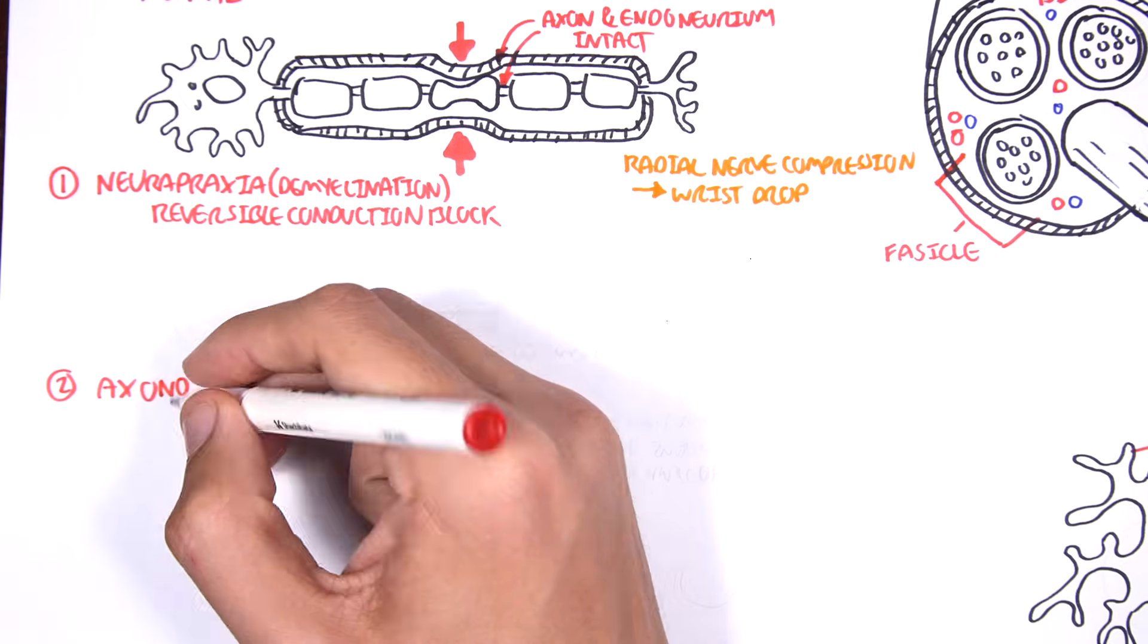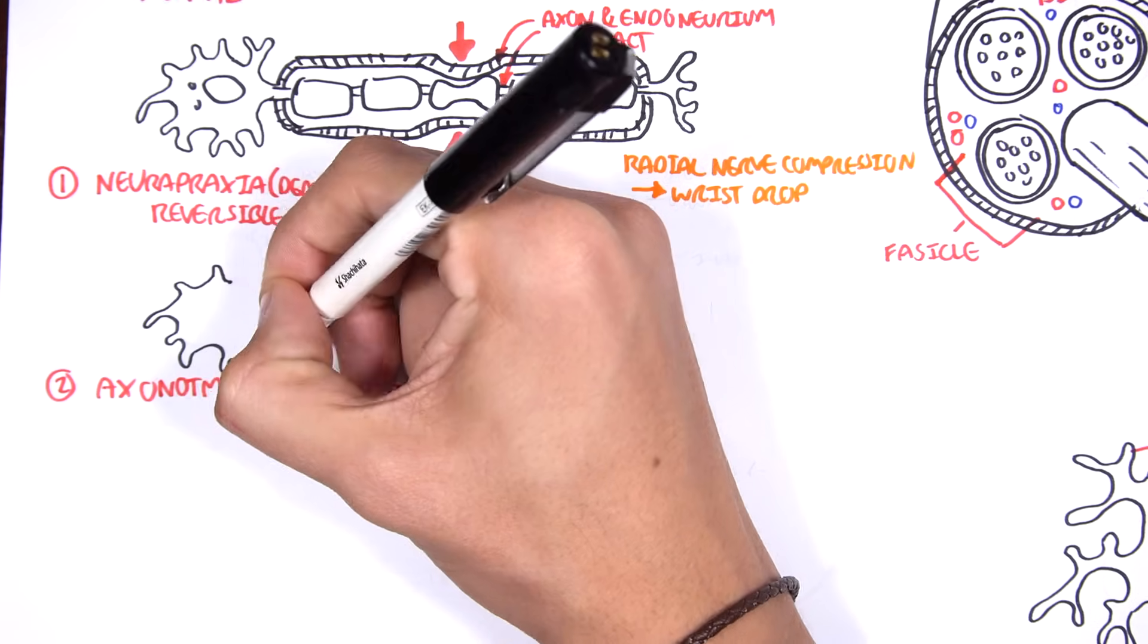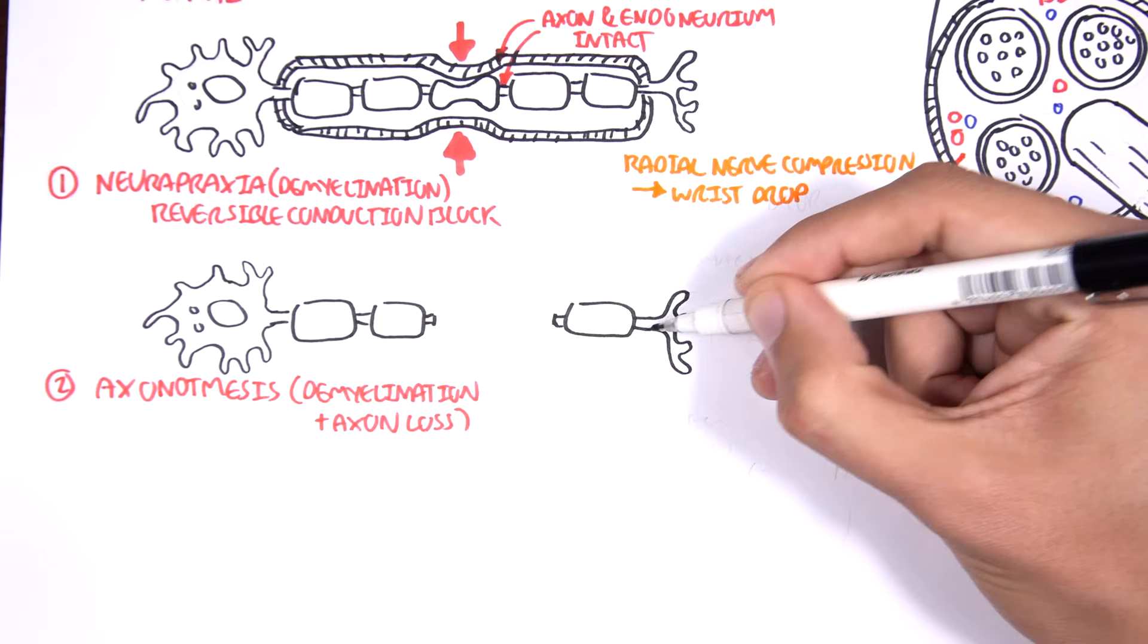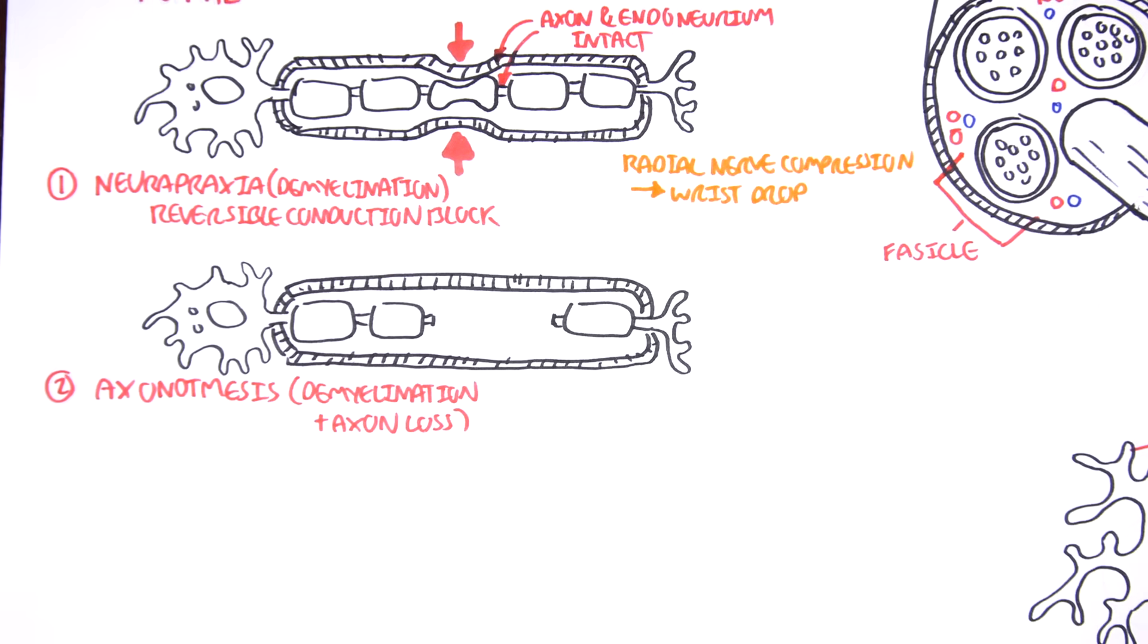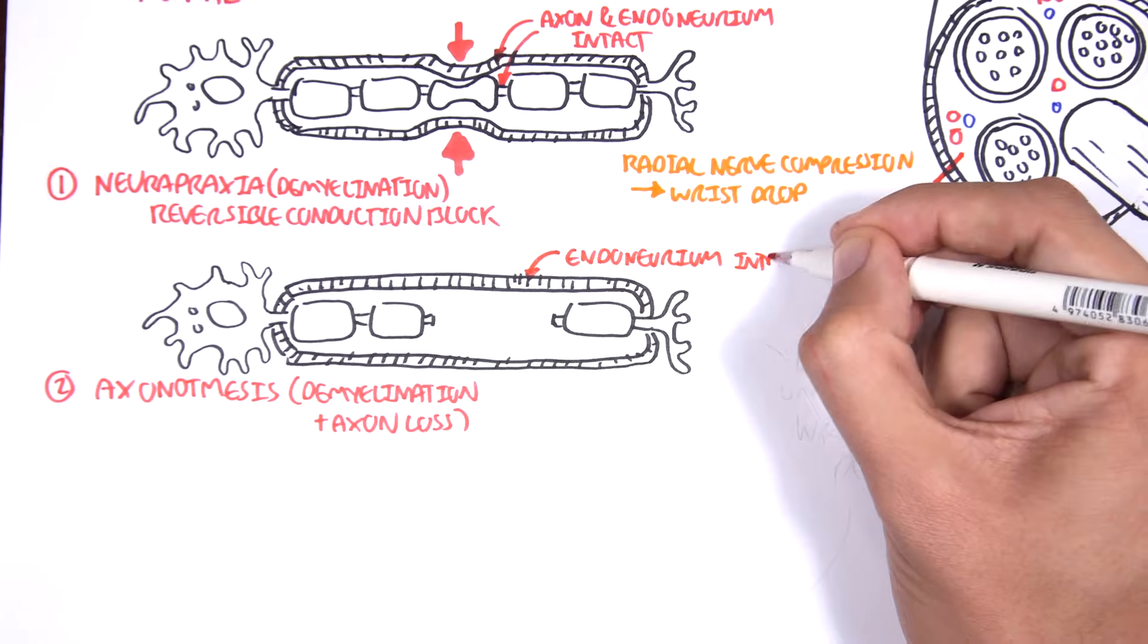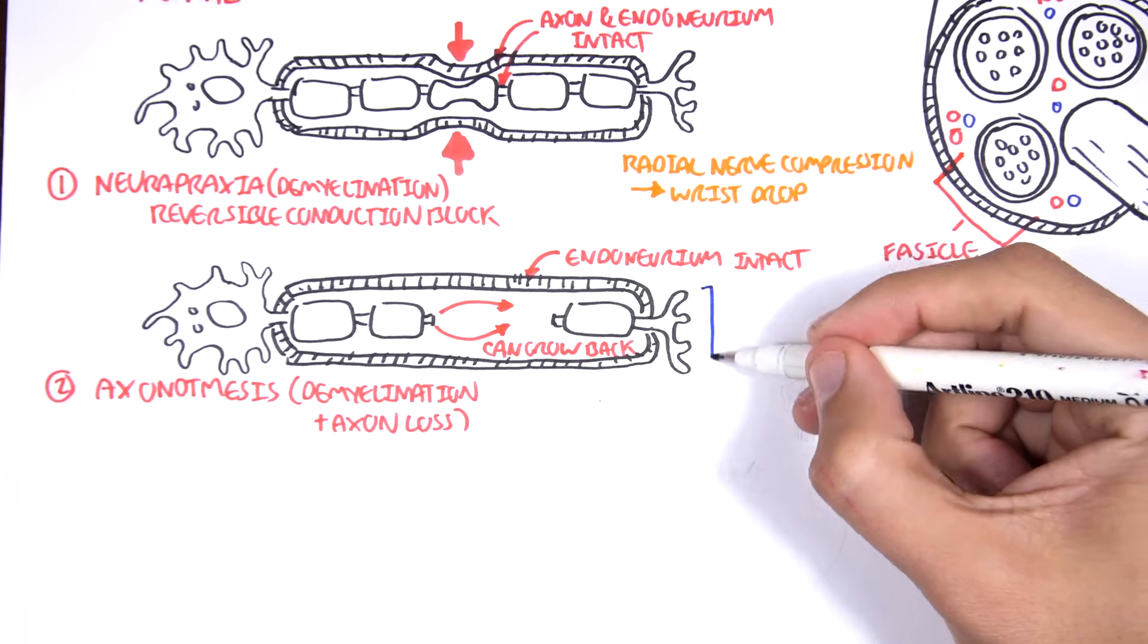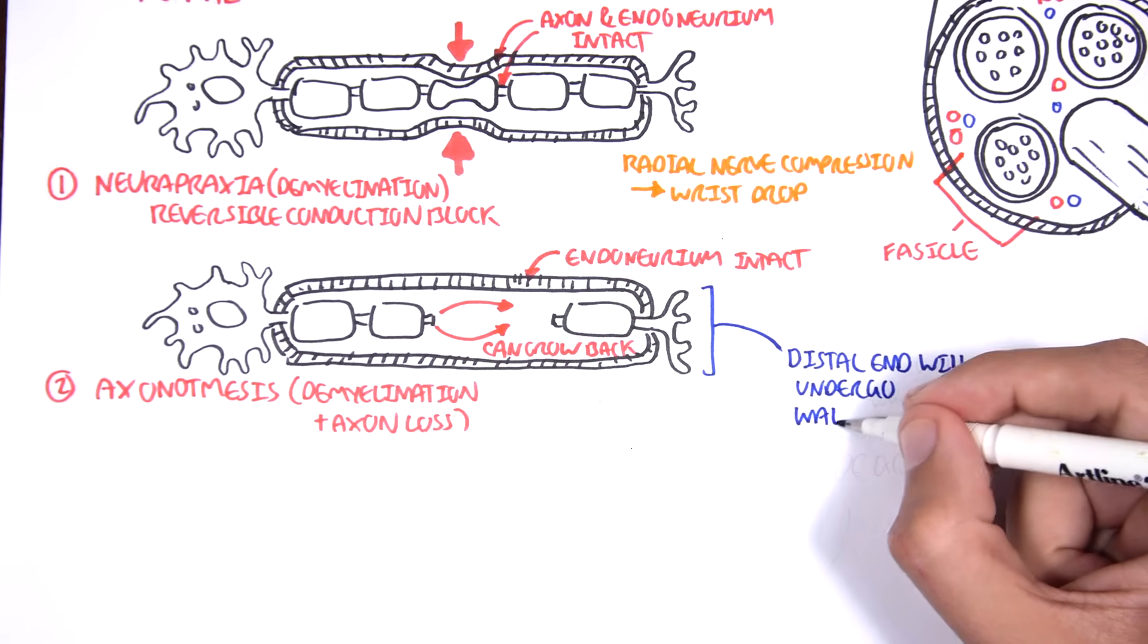The second type of nerve injury is called axonotmesis, which is essentially where you have demyelination plus axon loss. Now, if I were to draw a diagram, here we have the neuron, and here, as you can see, we have a segment lost. However, the endoneurium is still intact. And so, this actually allows, this means that the neuron can regrow, can grow back. And so, because it also has the body, the body is still there, the body can grow the axon back, as well as the terminal. However, the terminal, in this case, will die off. So, the distal end will undergo what's known as Wallerian degeneration.